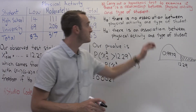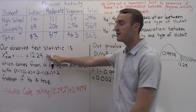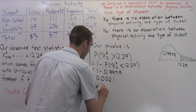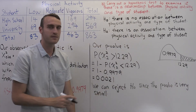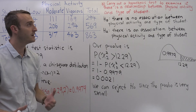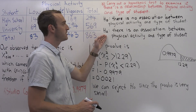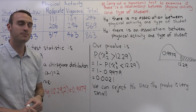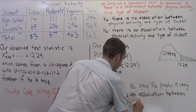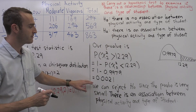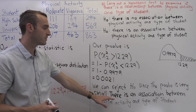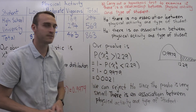Given that the null hypothesis is true, the chances that we observe our test statistic or something more extreme is really, really small, so we have evidence against H0. We've rejected the null and accept the alternative hypothesis that there is an association between physical activity and type of student. In summary, we have a very small p-value of 0.0021, so we reject H0 and conclude that there is an association between physical activity and type of student.